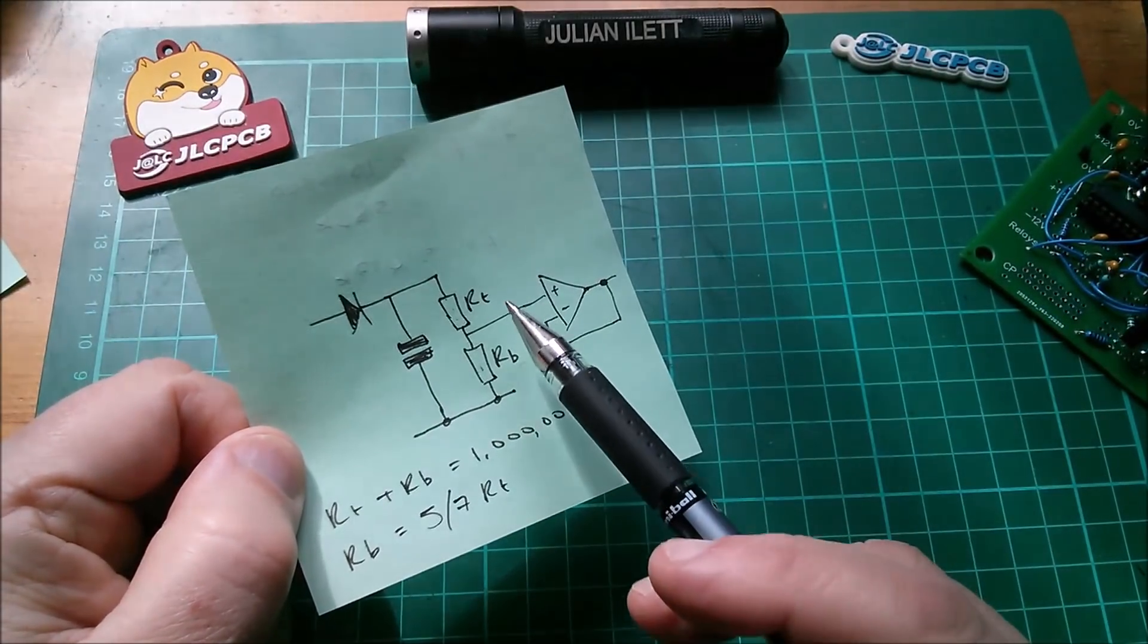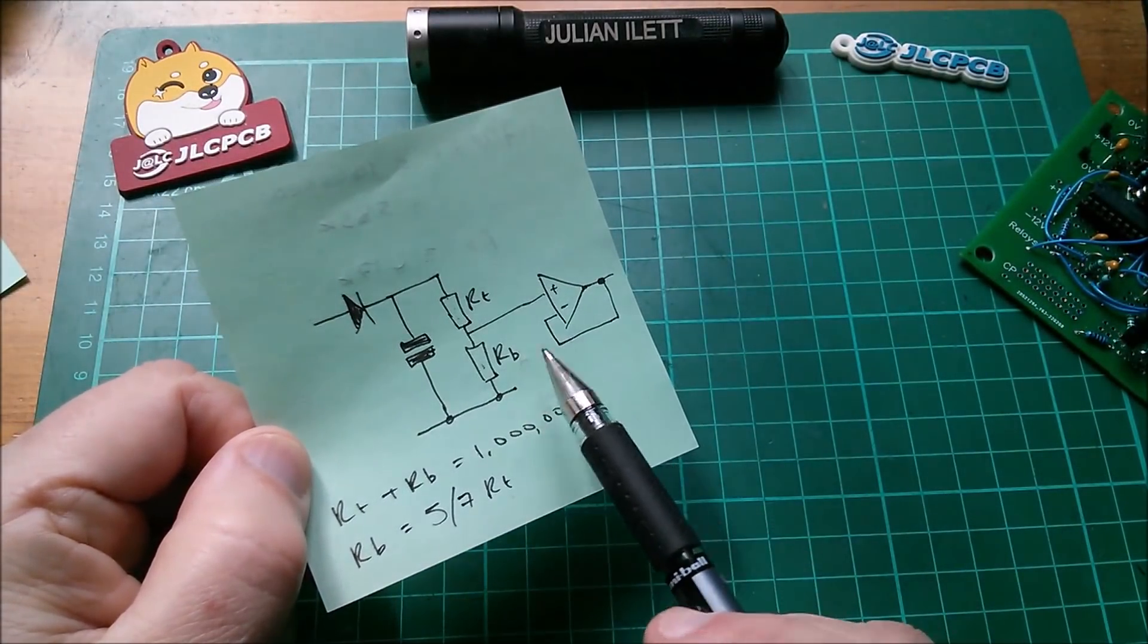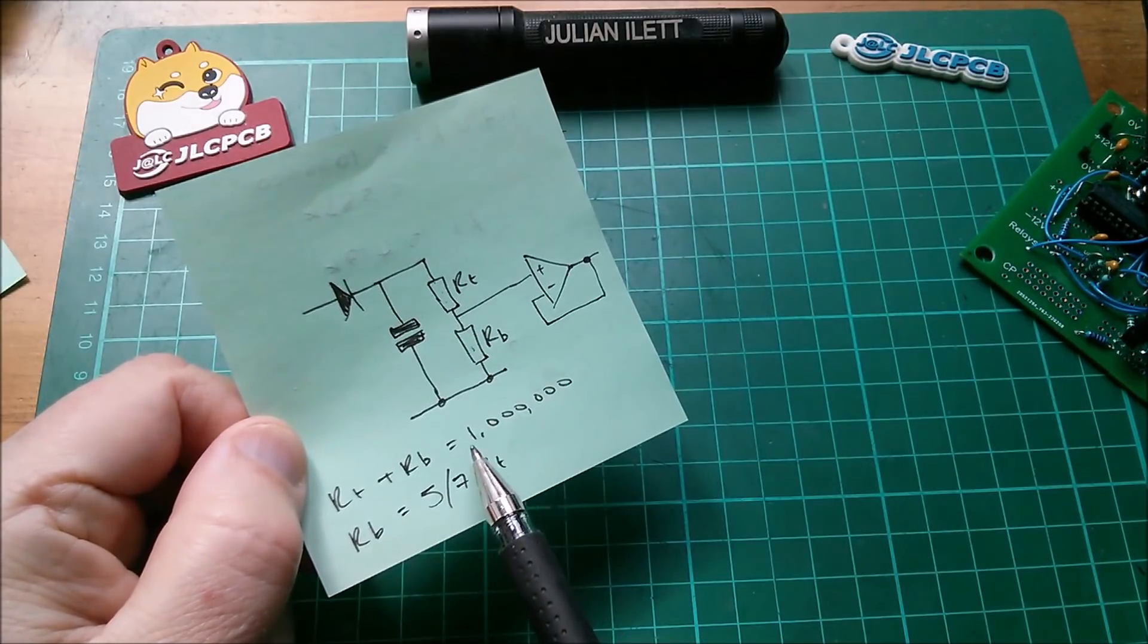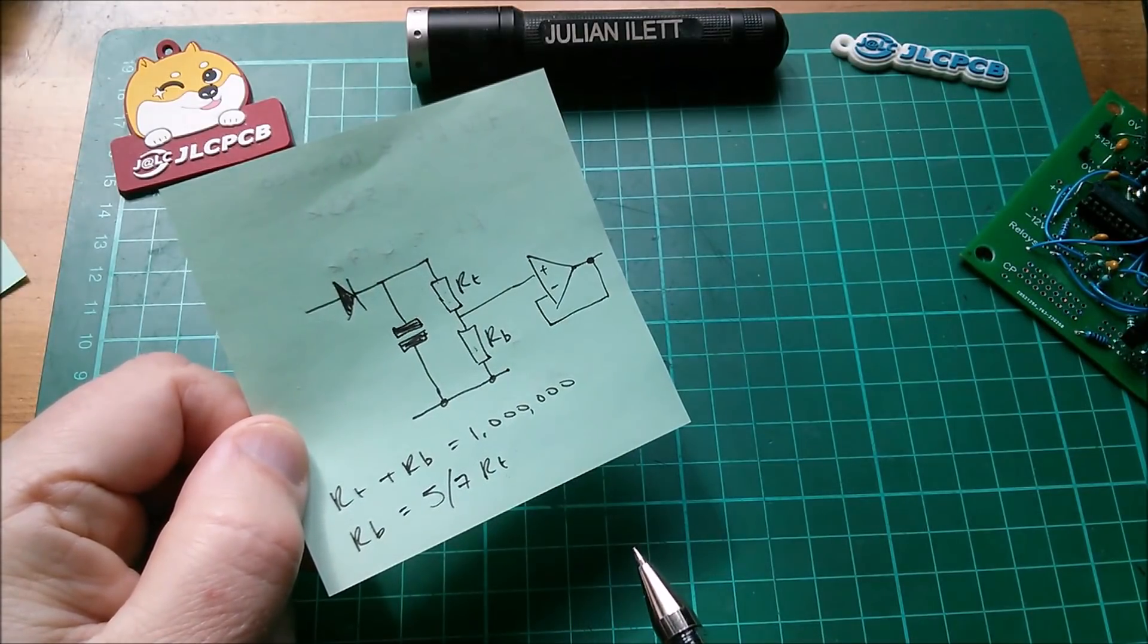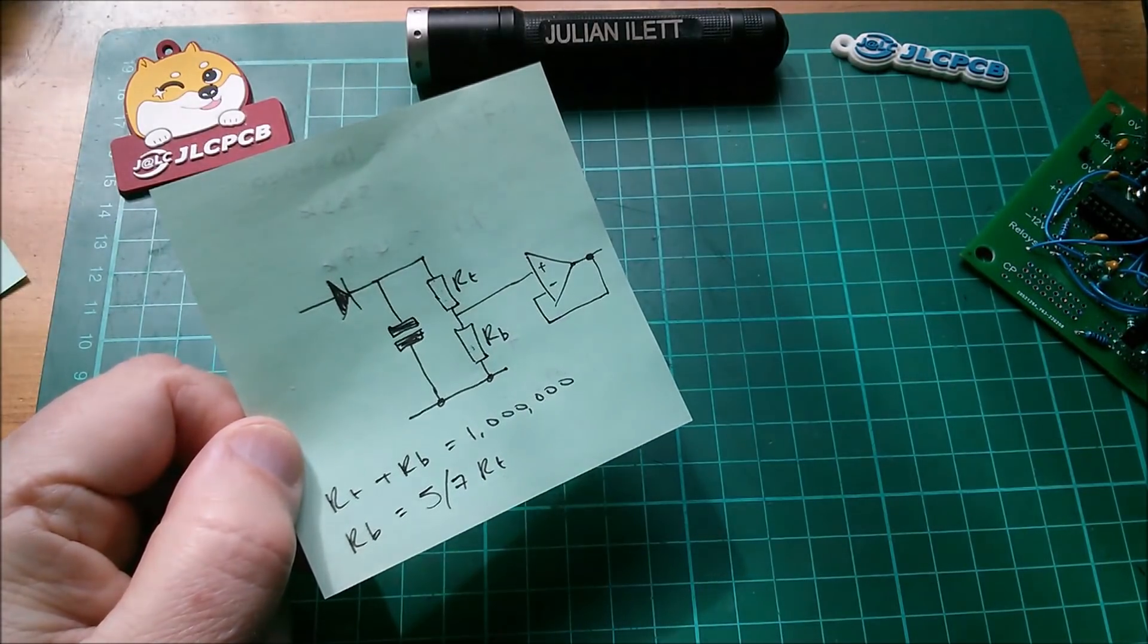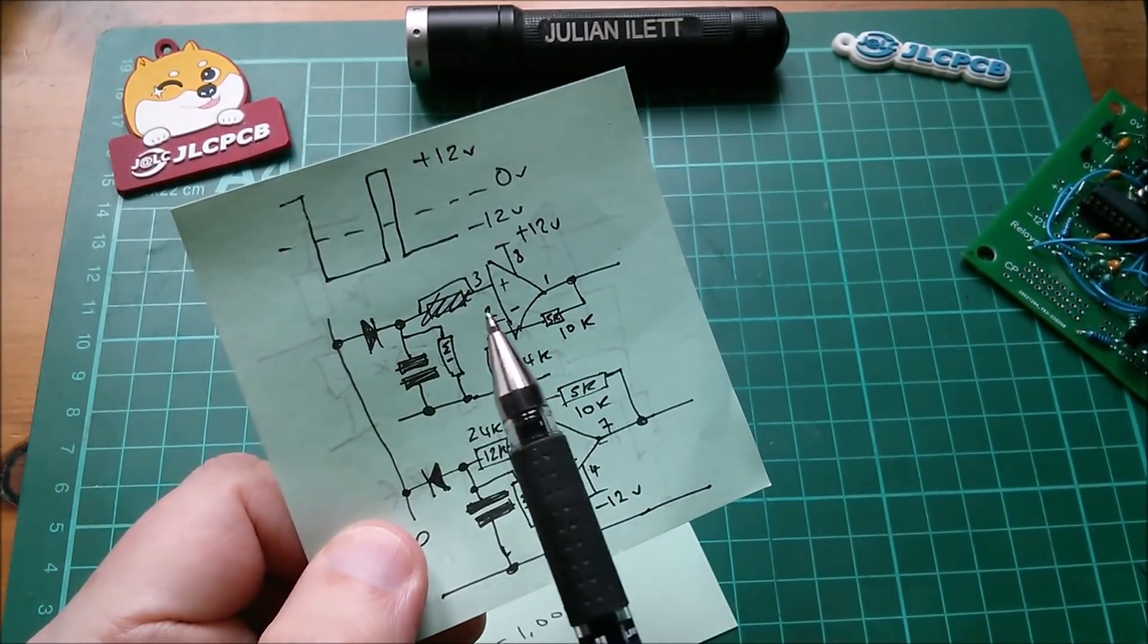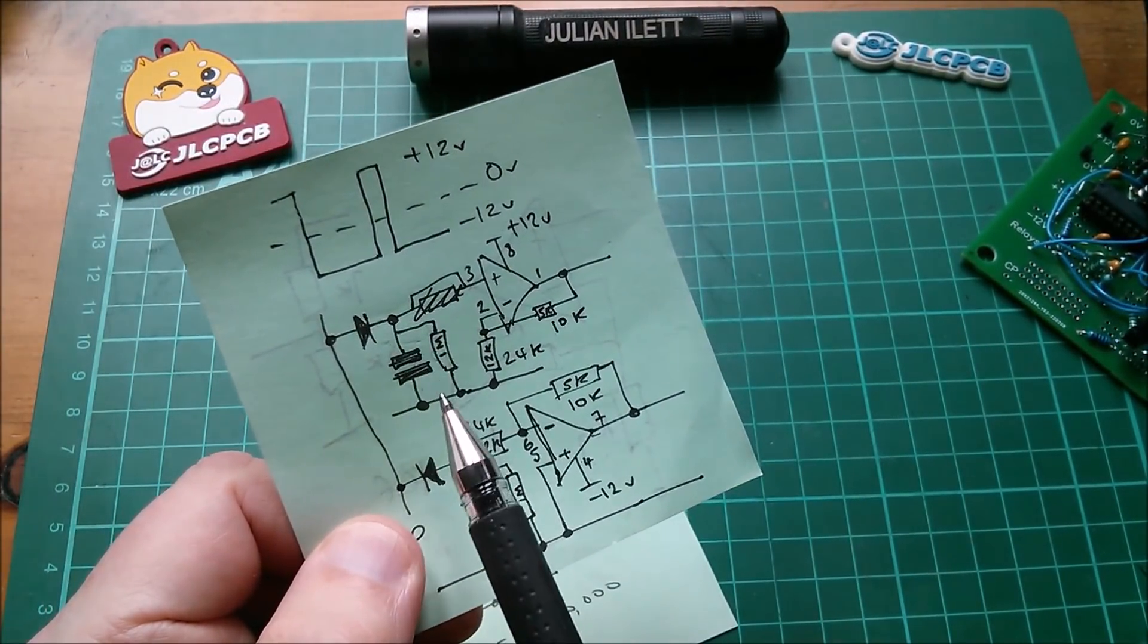The question is, what are these two resistor values? Calling them Rt and Rb, we know that Rt plus Rb must be one megaohm, a million ohms, because there it is, one megaohm across that capacitor to provide a very slow discharge.